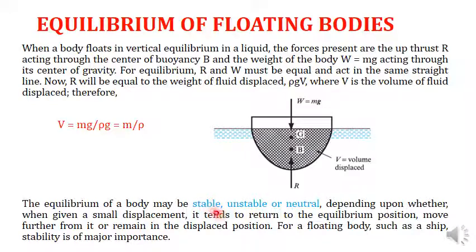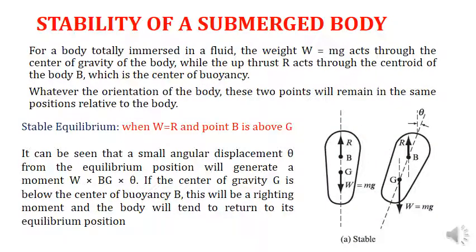Stability is categorized into three groups: stable, unstable, and neutral. Stability means the tendency of a body when displaced to return to its equilibrium position. If displaced slightly and it returns — stable. If displaced and it does not return — unstable. If displaced to a new position and remains stable there — neutral. For floating bodies such as ships, stability is of major importance practically.